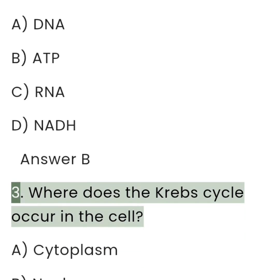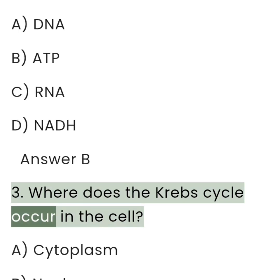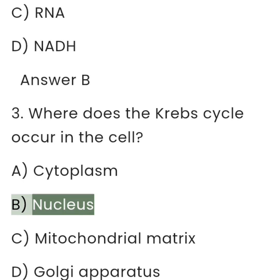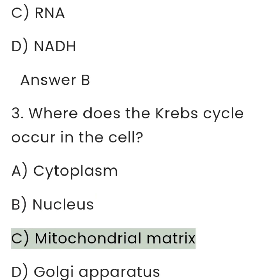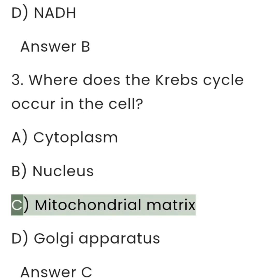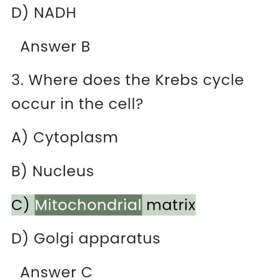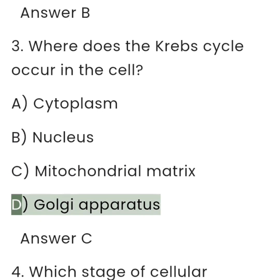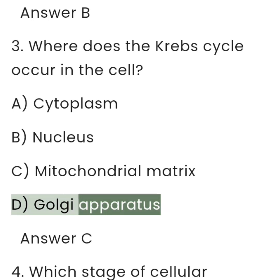3. Where does the Krebs cycle occur in the cell? A. Cytoplasm. B. Nucleus. C. Mitochondrial matrix. D. Golgi apparatus.